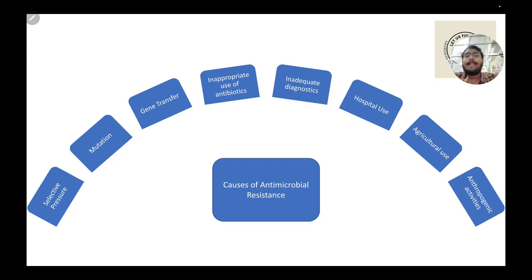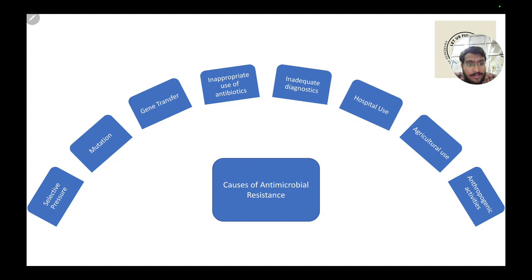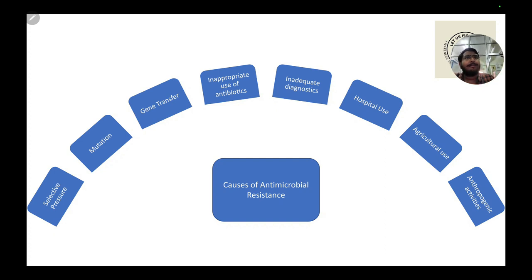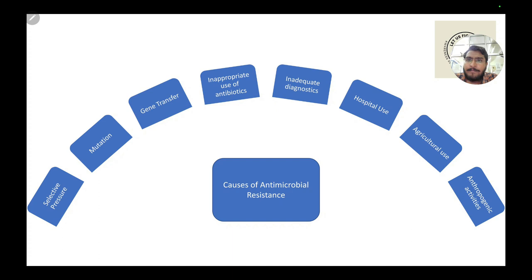These include inappropriate use of antibiotics, lack of infrastructure and diagnostics, inappropriate use or heavy usage of antibiotics in hospitals, use of such agents in agriculture and various kinds of farming, and several other human activities — that is, anthropogenic activities — which are leading to antimicrobial resistance. We will speak about each one of them in detail, in parts.